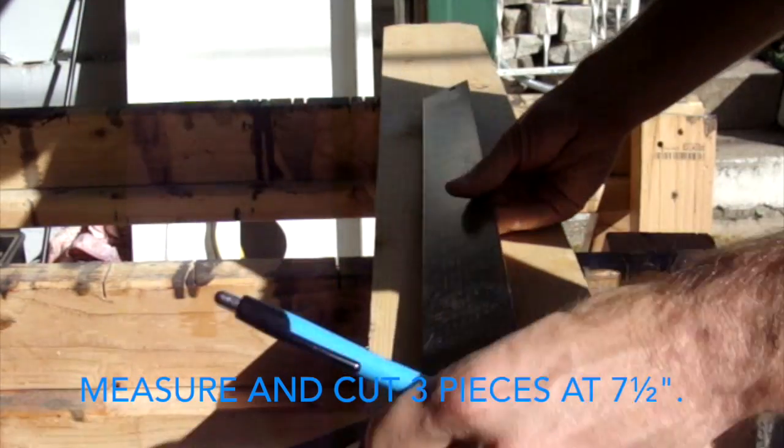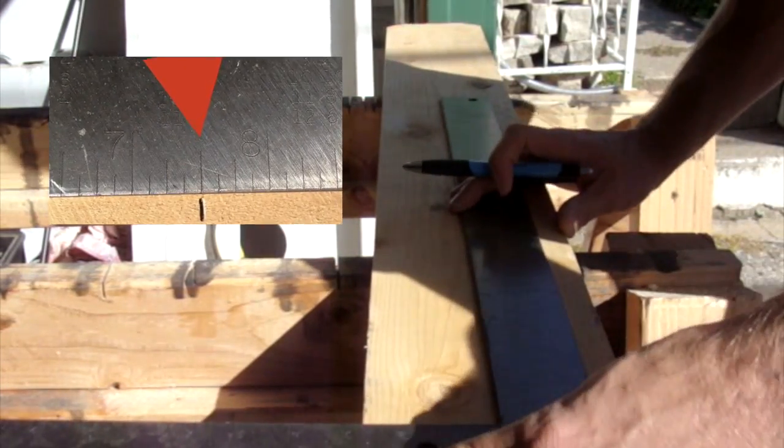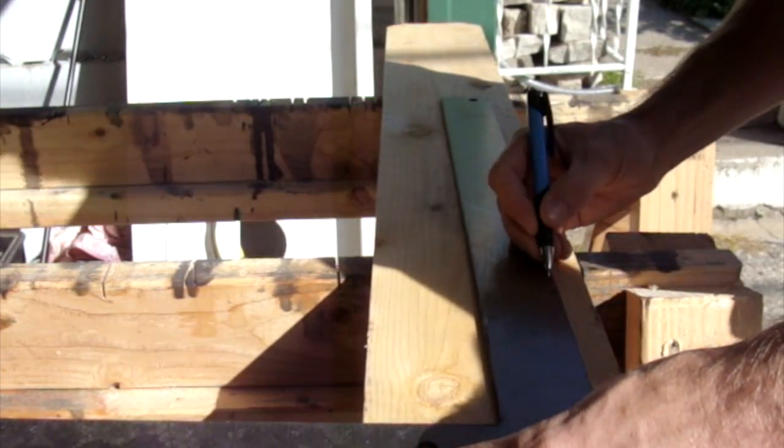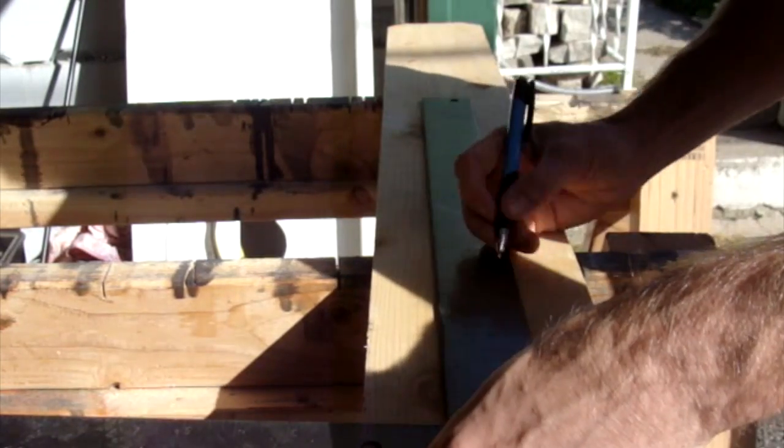For this birdhouse, we're going to need three pieces that are 7½ inches long, cut out of our ½ inch cedar fencing that is 5½ inches wide and 4 feet long.